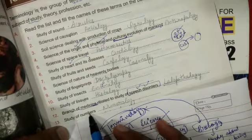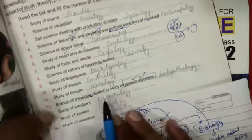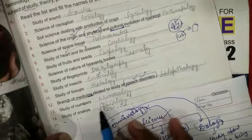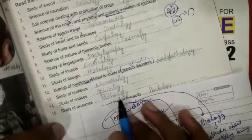The next one is study of numbers, where you study about numbers, that is numerology. The next one, study of snakes, that is ophiology. Then study of diseases, that is pathology.